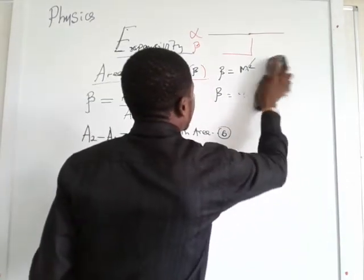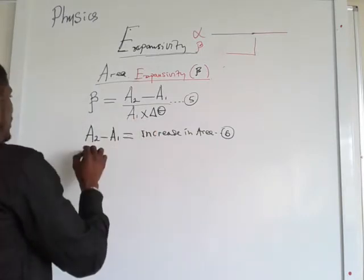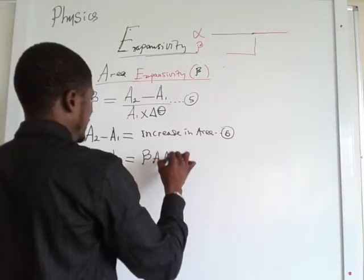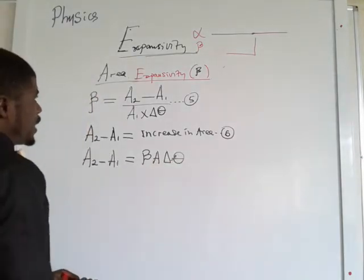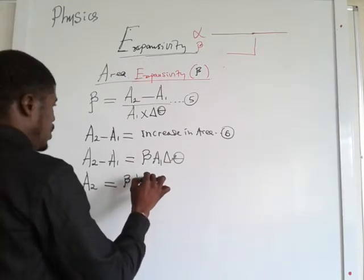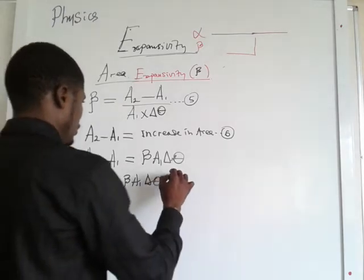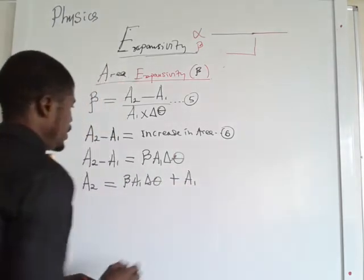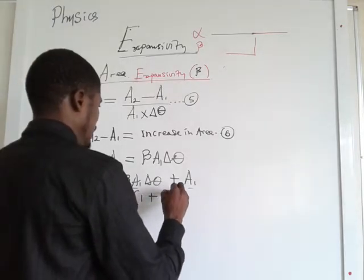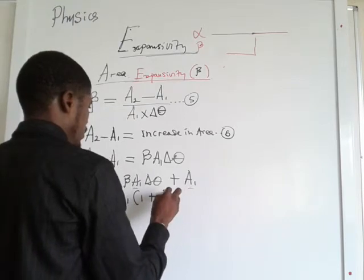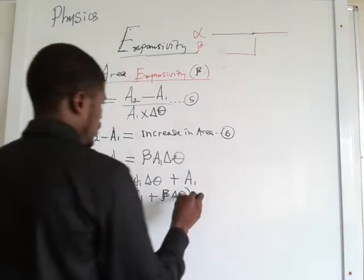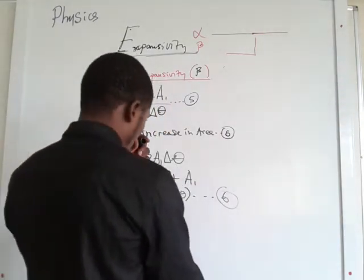From the above, A2 minus A1 equals beta times A1 times change in temperature. Making A2 the subject of the formula: A2 equals beta times A1 times change in temperature plus A1. Since A1 is common, we factor it out: A2 equals A1 times (1 plus beta times change in temperature). This is equation number 6 (or 7).